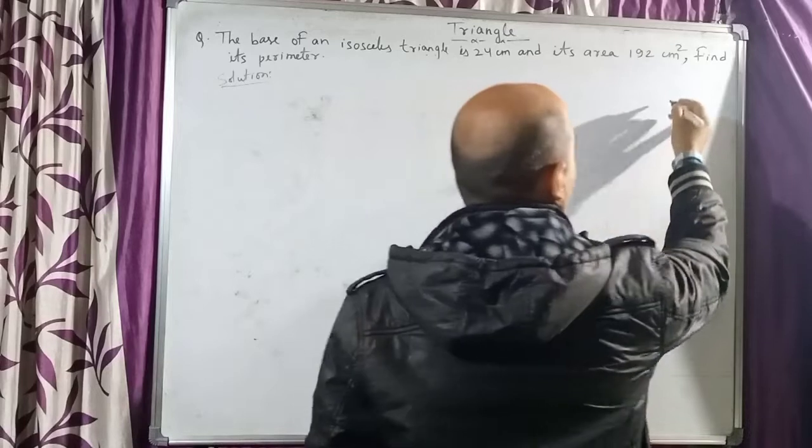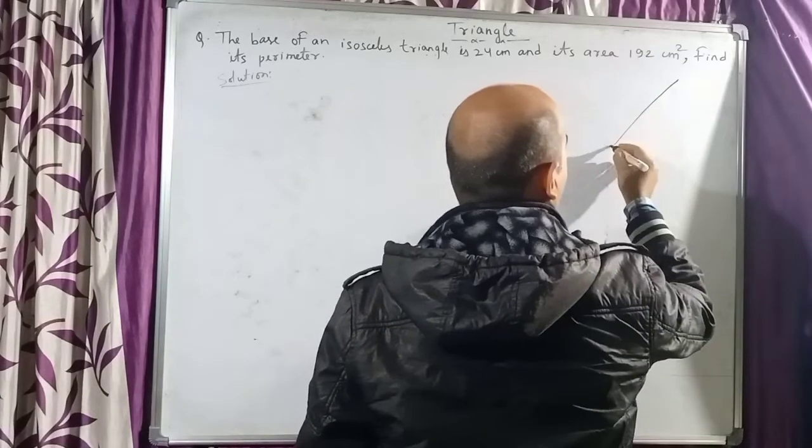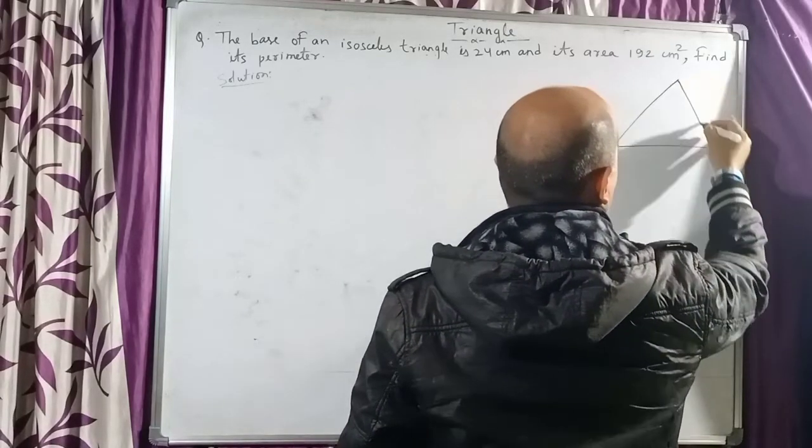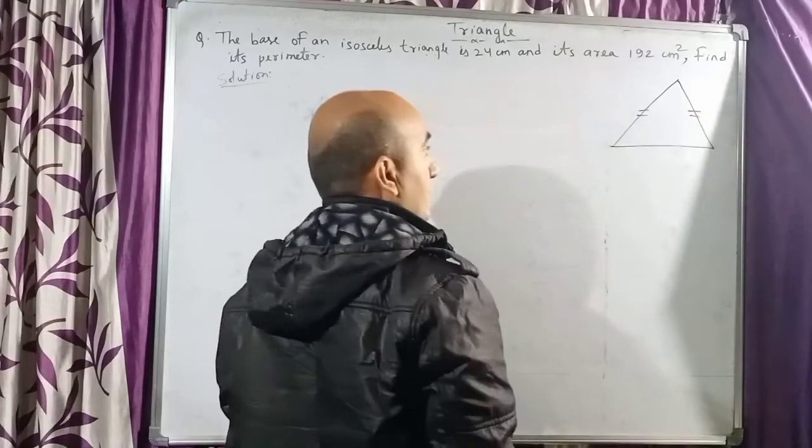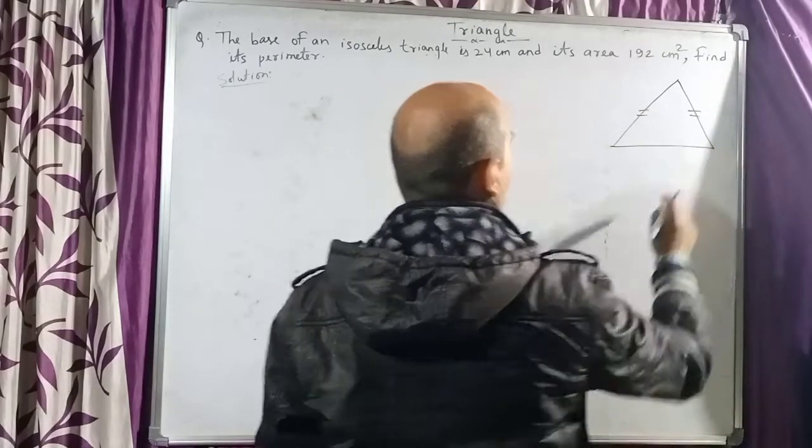So children, an isosceles triangle means a triangle having two of its sides equal. Let us take these two sides equal and this is the base of the triangle.